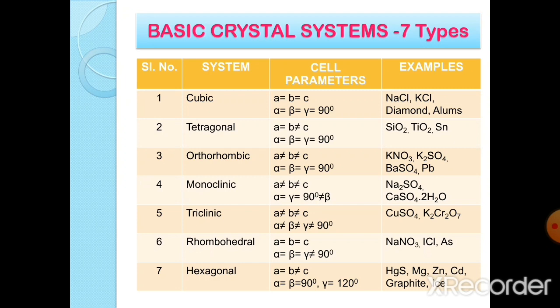Fourth, monoclinic crystal system: cell parameters are a ≠ b ≠ c, and α = γ = 90° but ≠ β. Examples: Na₂SO₄, CaSO₄·2H₂O, etc. Fifth, triclinic crystal system: cell parameters are a ≠ b ≠ c, and α ≠ β ≠ γ ≠ 90°. Examples: CuSO₄, K₂Cr₂O₇, etc.